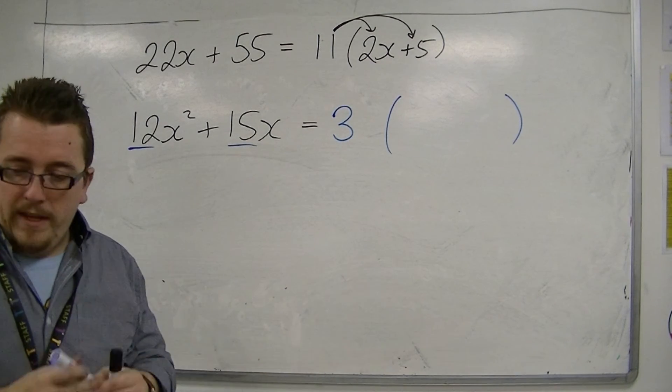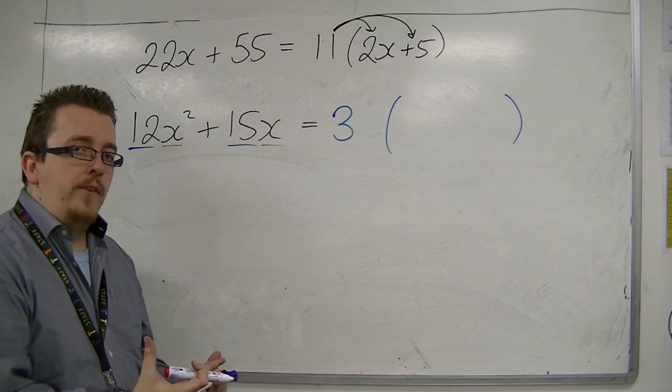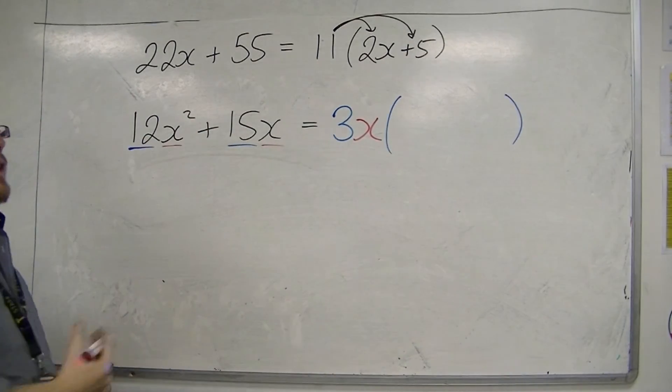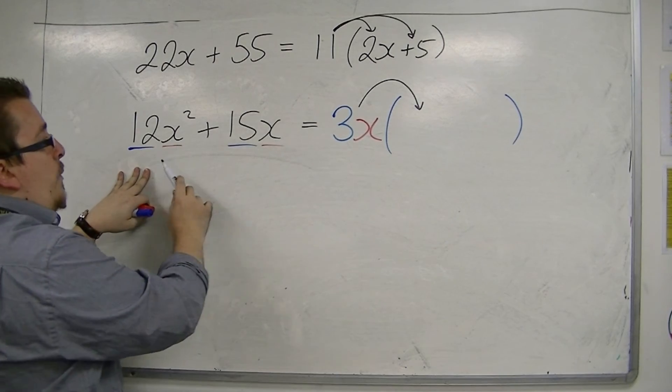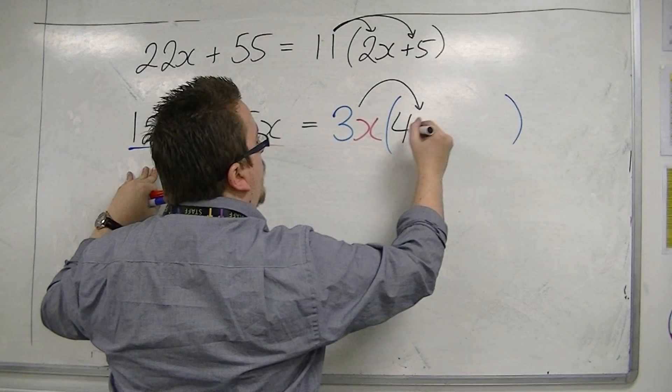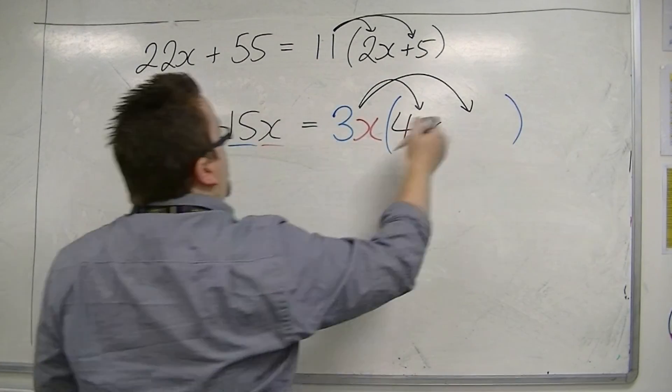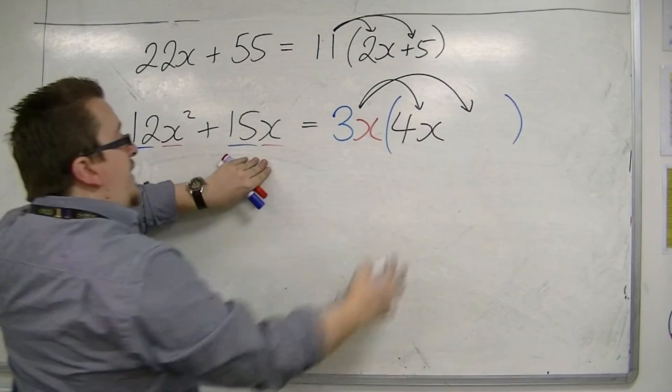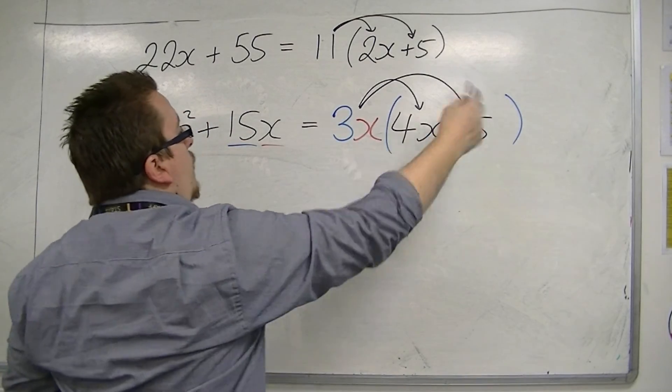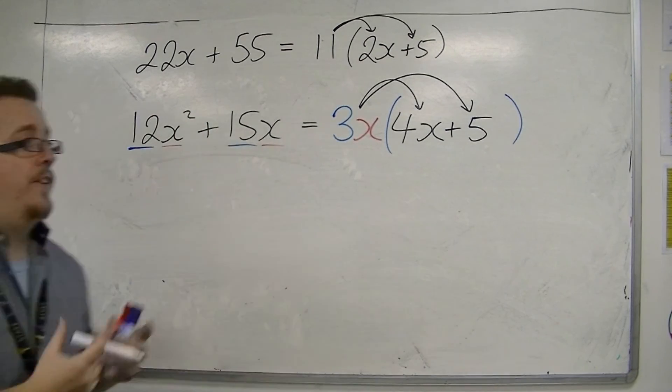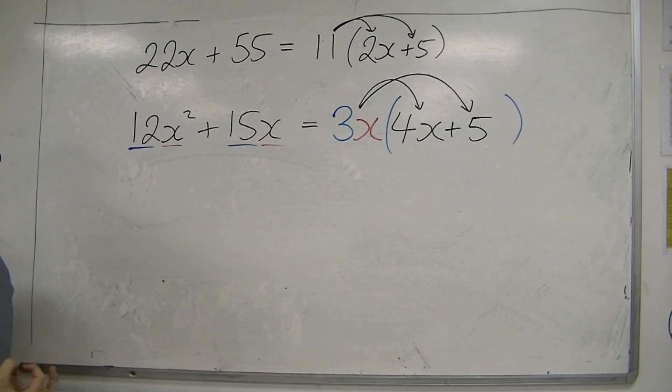However, we can also see that both of these have an x as well. So, they actually have a common factor of x. And so, x can also be brought outside of the bracket. Which means that I have 3x times something will make 12x squared. And the only way to make 3x times something will make 12x squared would be to have 4x. Because 3 lots of 4 is 12, and x times x is x squared. And then, 3x times something will make 15x. So, 3x times 5 will make 15x. And so, now, this is factorised. The 3x has been brought outside, and the 4x plus 5 is inside. So, if you have an x squared term and an x, then an x can be brought outside of the bracket as well.